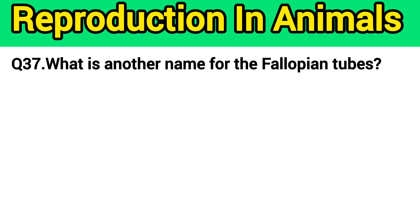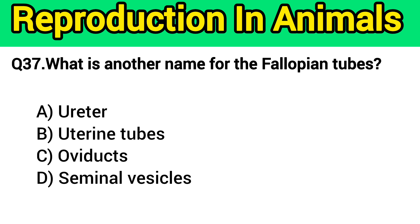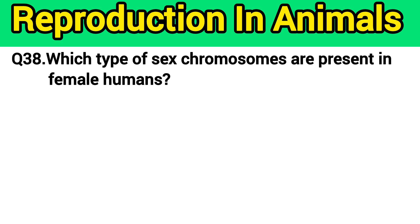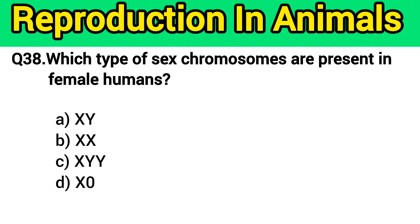Question number 37: What is another name for the fallopian tubes? The right answer is option C — oviducts. Question number 38: Which type of sex chromosomes are present in female humans? The right answer is option B — X chromosomes.